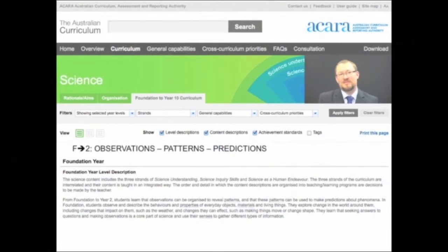there's a statement about what reception one and two is about. What the flow is through reception one and two. And it really talks about it being about observations, patterns, and then predictions. That's that flow that runs through it.